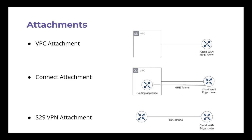The last attachment type I want to mention is the site-to-site VPN attachment, which provides IPsec to whatever location you have — laptop, office, whatever. There are no limitations, but you pay for it. So if you can do it with the connect attachment, why use the VPN attachment? But it's there.